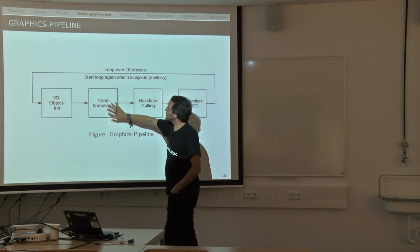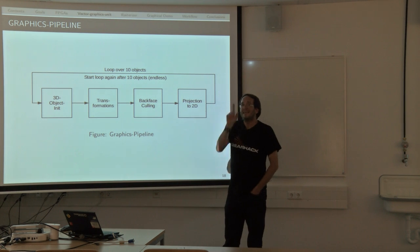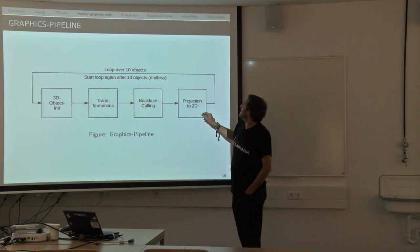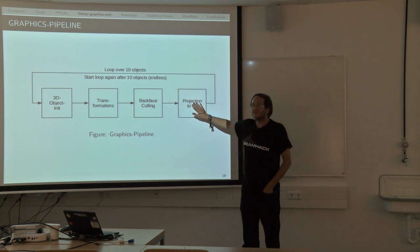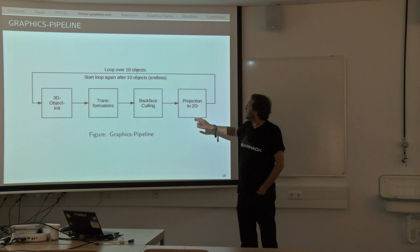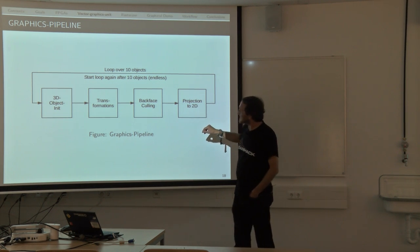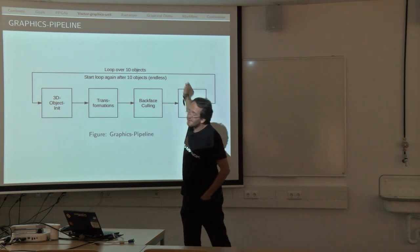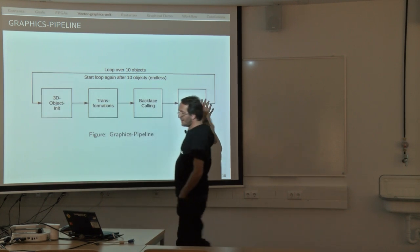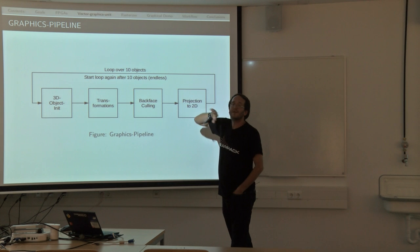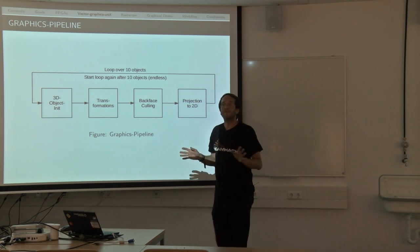Altogether, that is a pipeline. Initializing cube, transformation cube, backface culling. That is the point where we don't want to see the lines behind the object. I will not go deeper into how that works now. It's a standard technique based on the surfaces of the cube. Afterwards we have to do a projection, which is also some matrix multiplication, also standards from computer graphics, put into a function. And we loop that over 10 objects. Object 1 goes in, goes through, object 2 goes in, goes through, till object 10. And after that we start again with object 1. That is the whole clue about the vector graphics unit.